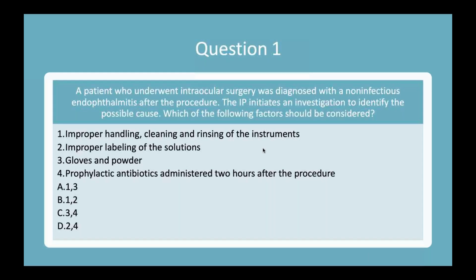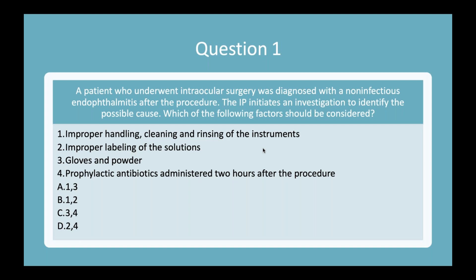We're going to start with chapter 63, ophthalmology services. Question one: A patient who underwent intraocular surgery was diagnosed with non-infectious endophthalmitis after the procedure. The infection preventionist initiates an investigation to identify possible causes. Which of the following factors should be considered? One, improper handling, cleaning, and rinsing of instruments. Two, improper labeling of solutions. Three, gloves and powder. Or four, prophylactic antibiotics administered two hours after the procedure. Go ahead and put your answer in the chat box.